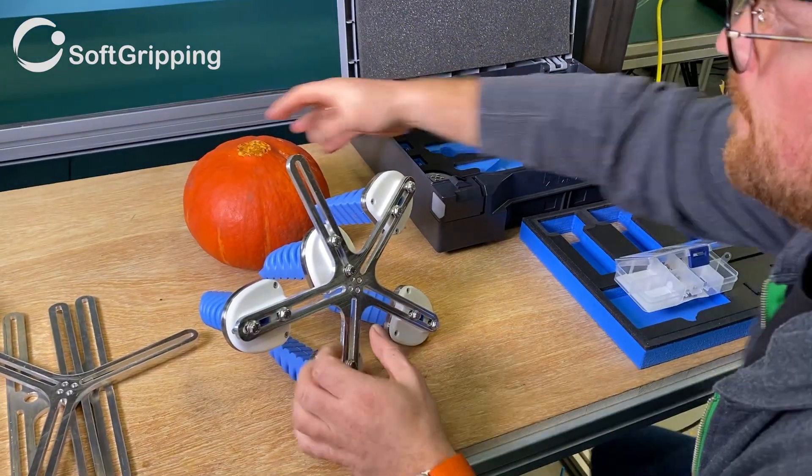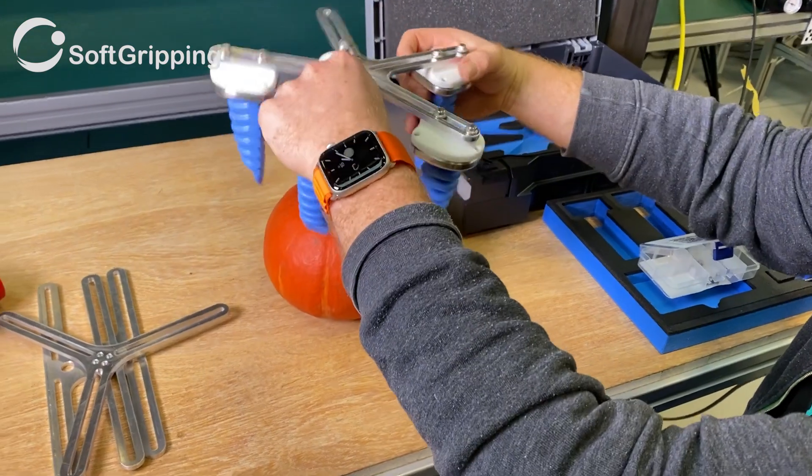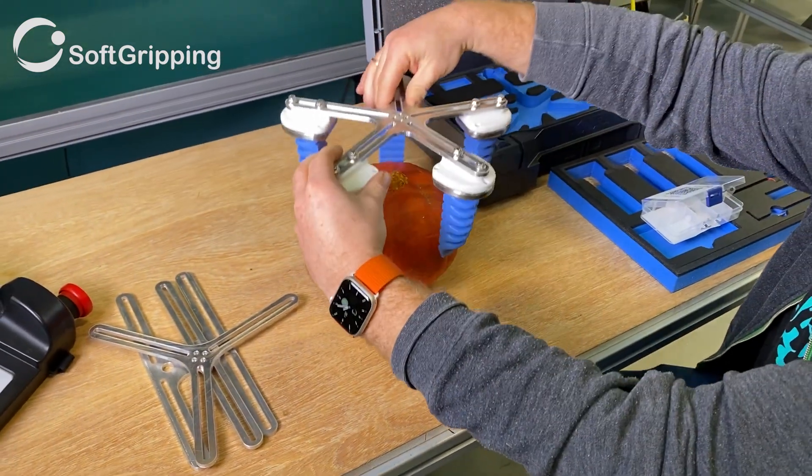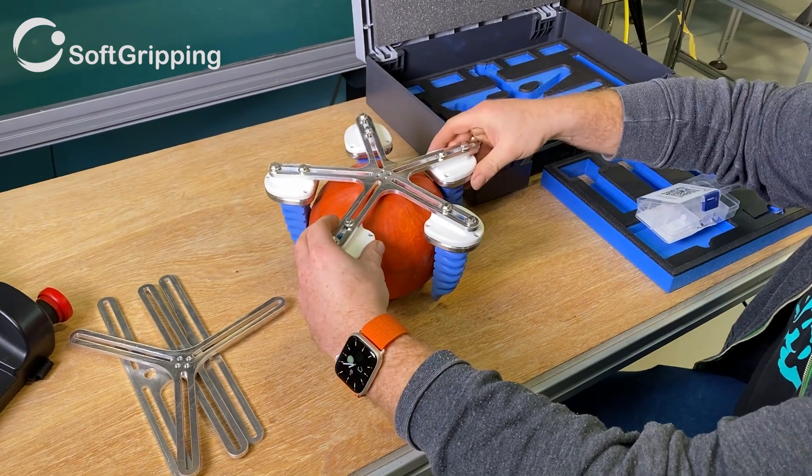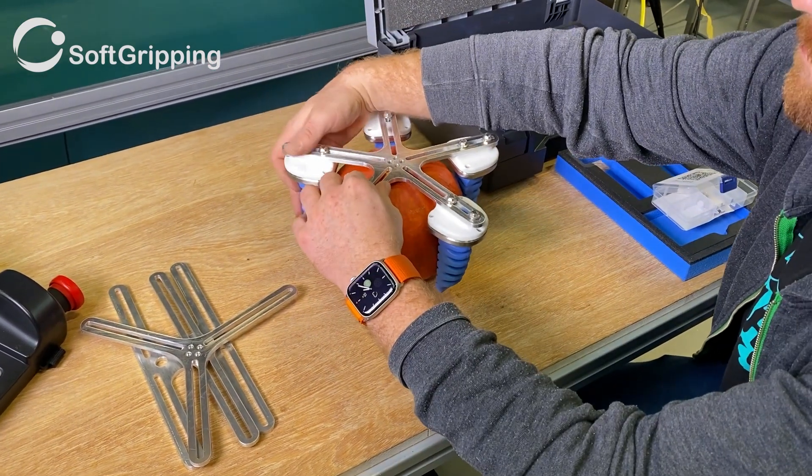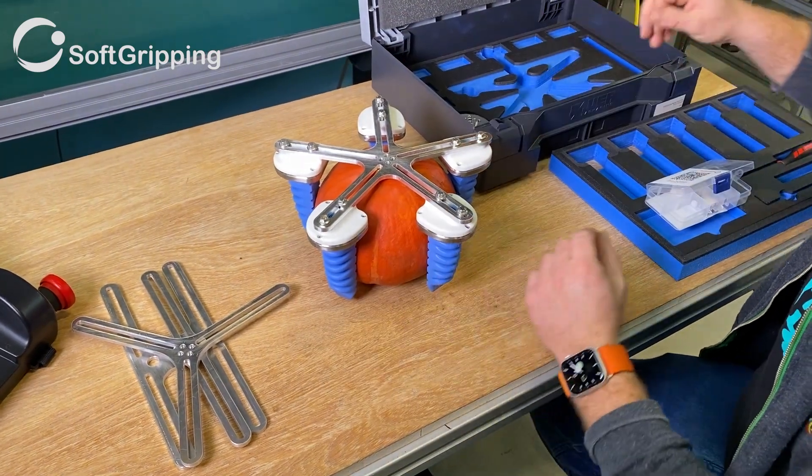After connecting the fingers, you can use your object to give the gripper configuration its final form before tightening all screws. The larger fingers are designed for handling bulky, large and heavy goods as well as nets and bags.